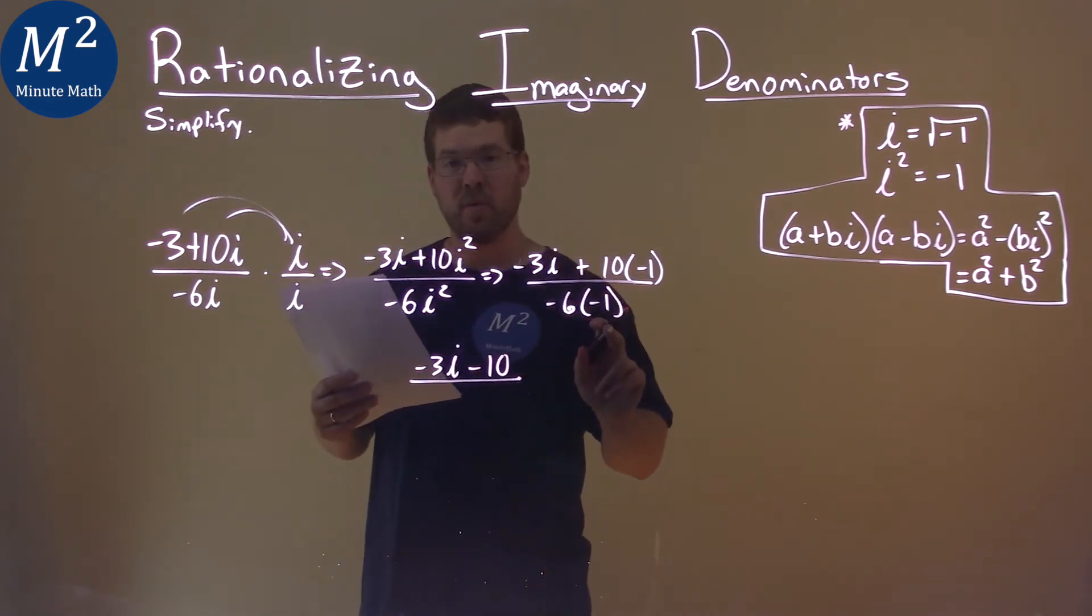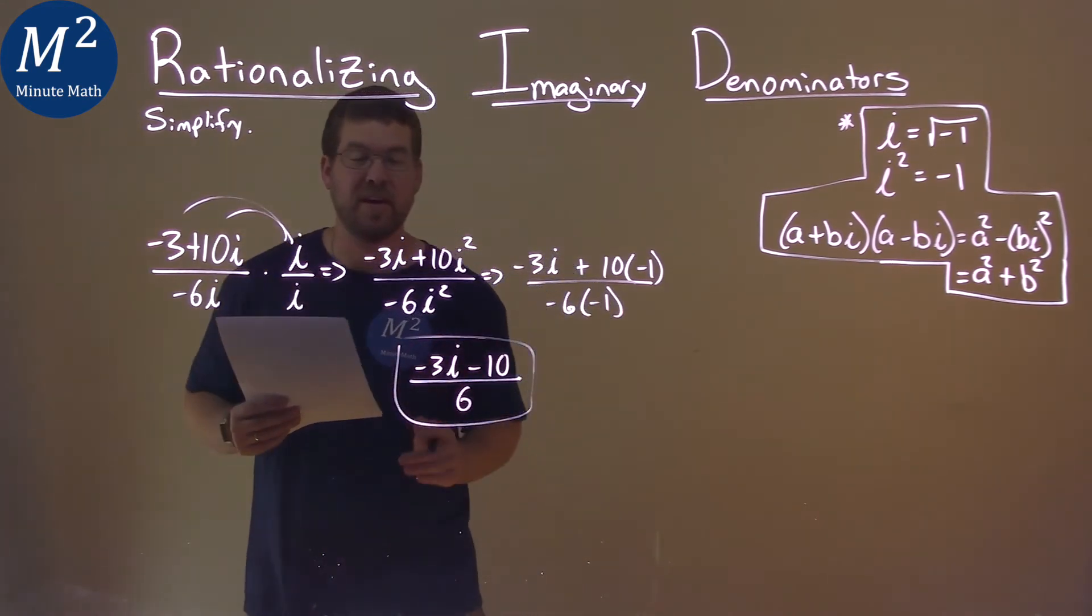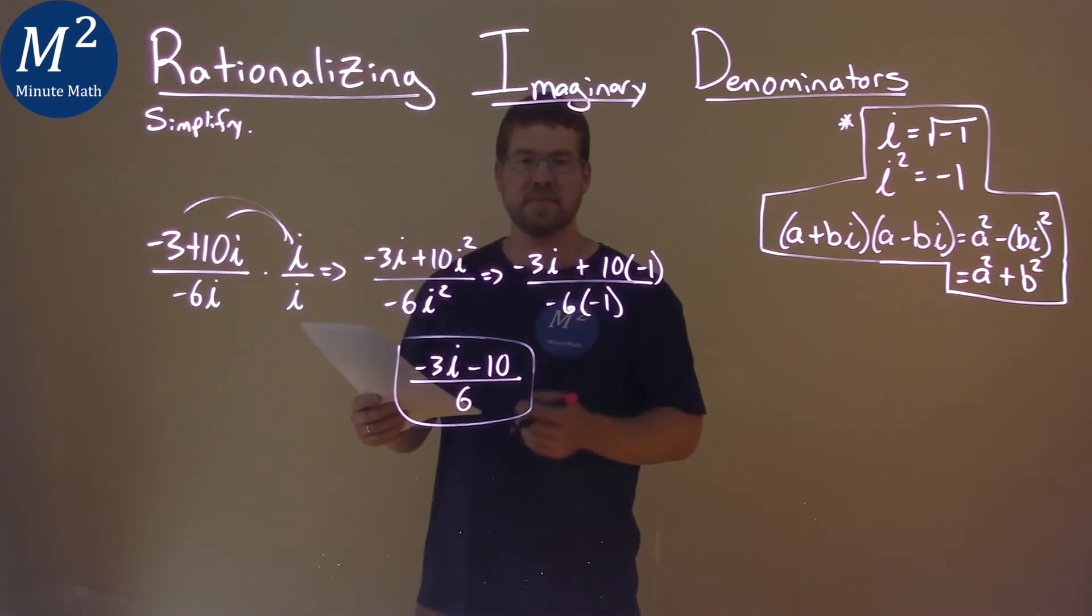over negative 6 times negative 1 is positive 6. And there actually we have our answer: negative 3i minus 10 over 6.